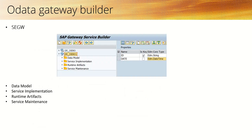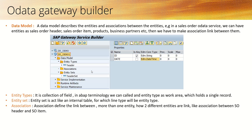Once we log into the SEGW transaction code, first we have to create a project. Once we create a project, there are four different components: the first is data model, then service implementation, runtime artifacts, and service maintenance.